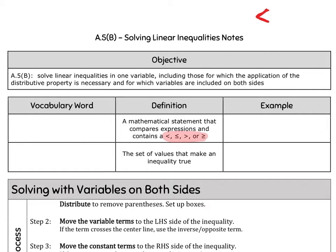Everybody take your left hand and do this — tilt it to the side. Doesn't it look like that first symbol? That's less than, because it's your left hand. If you put the little line underneath it, that's like half of an equal sign, so it's less than or equal to.